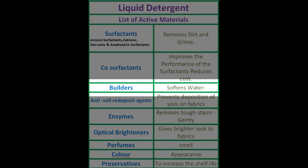Builders. In the washing process, builders are equally important to surfactants. Surfactants will remove the dirt and grime from the fabrics, and builders will facilitate the surfactants to do their role.